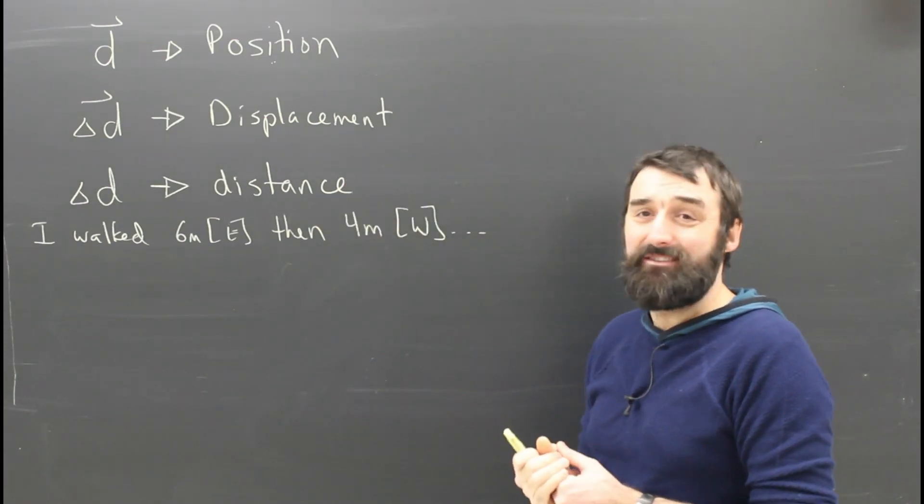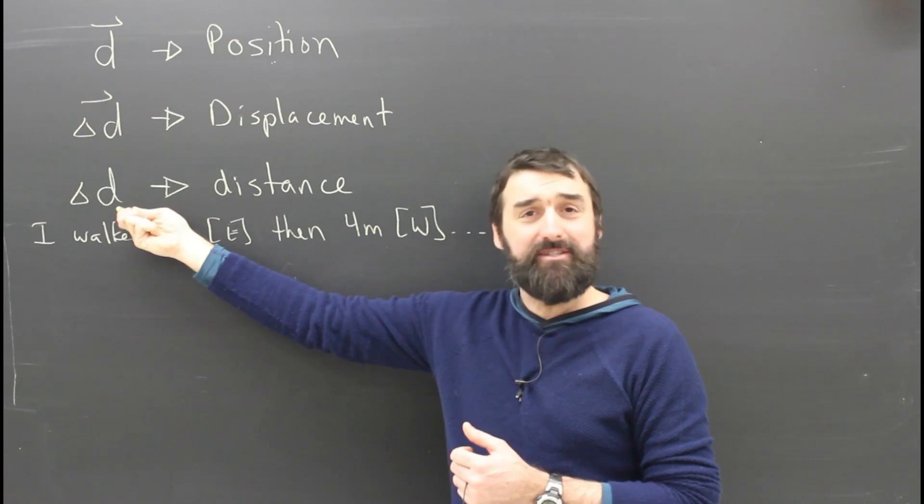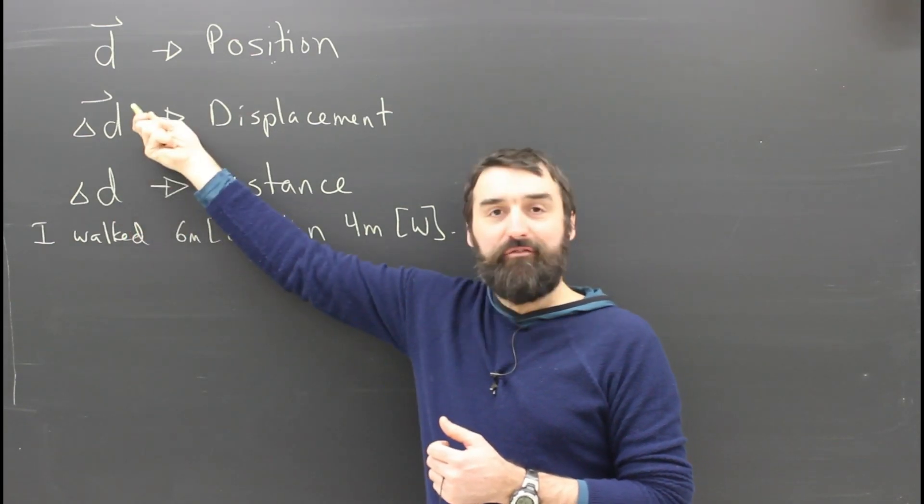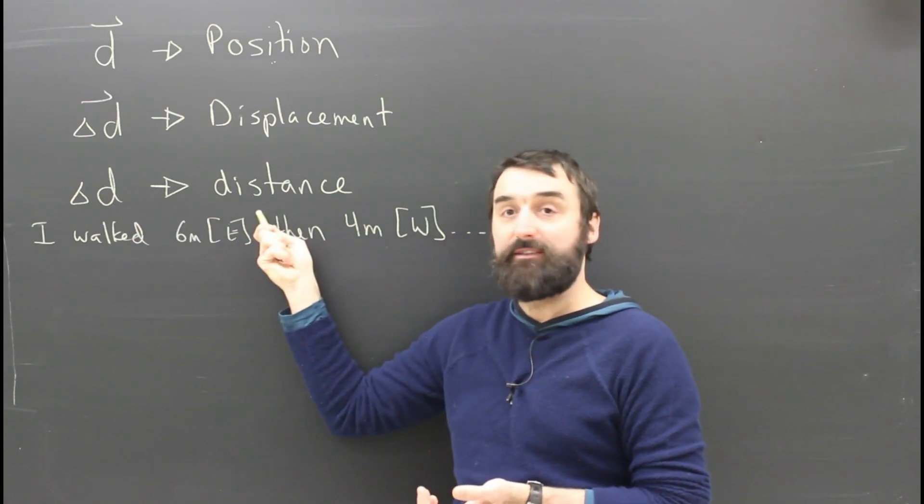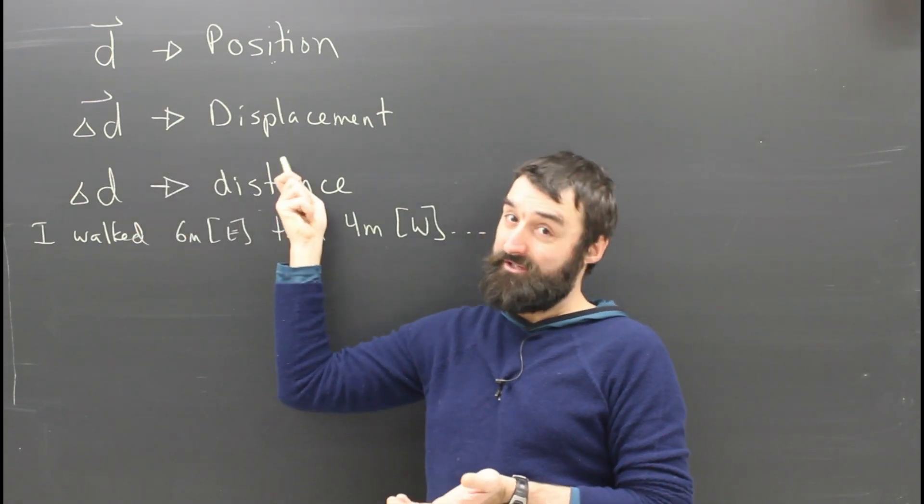As opposed to distance, which is a similar idea, so we use a similar symbol, but it's not a vector. It doesn't have a direction, so we take the little arrow off. So delta d stands for distance. Delta d with the arrow stands for displacement.